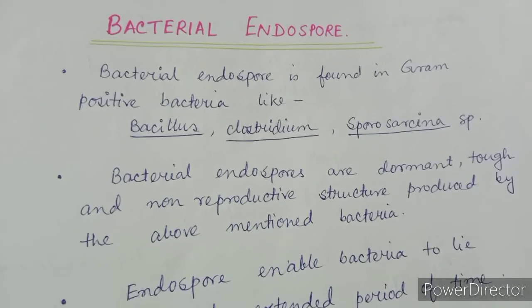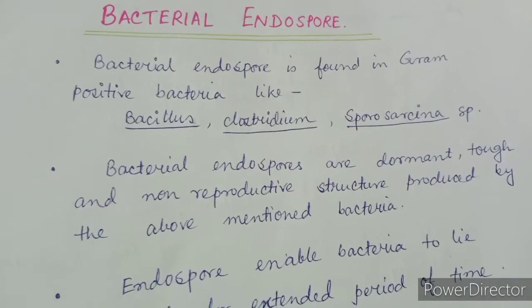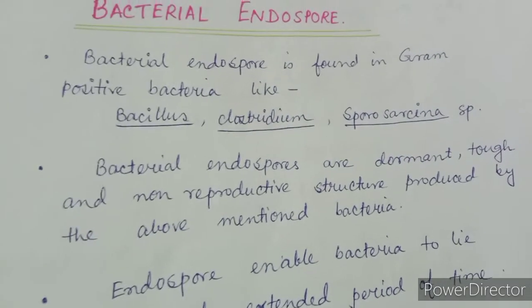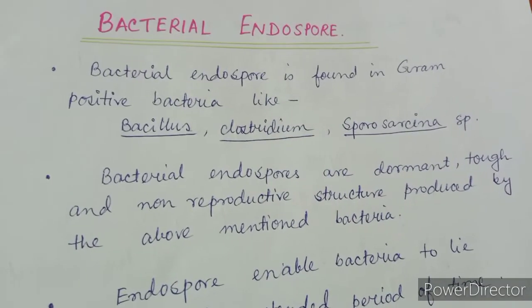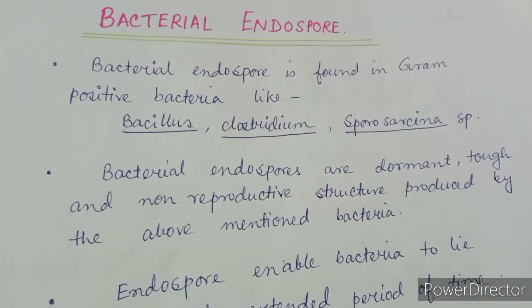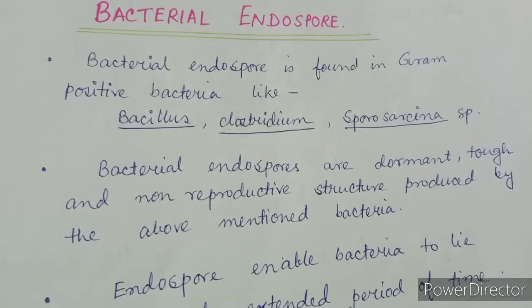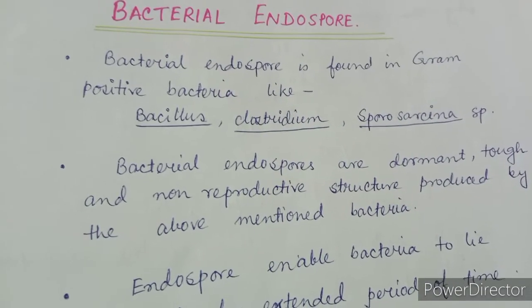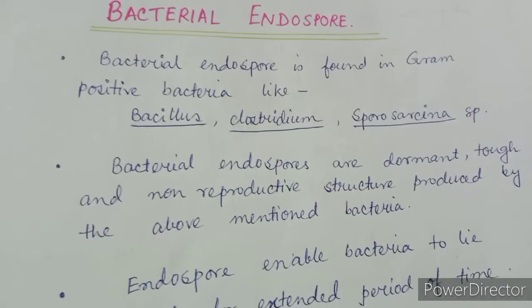Bacterial endospore is found mainly in gram-positive bacteria like Bacillus, Clostridium, Sporosarcina, etc. But there are many more bacterial species which can form endospores.